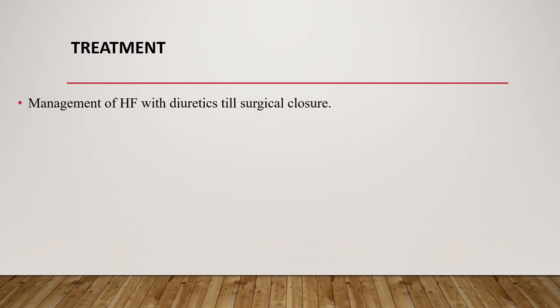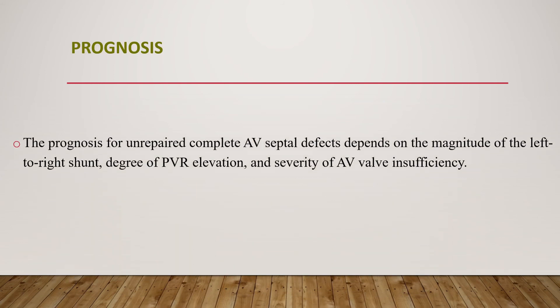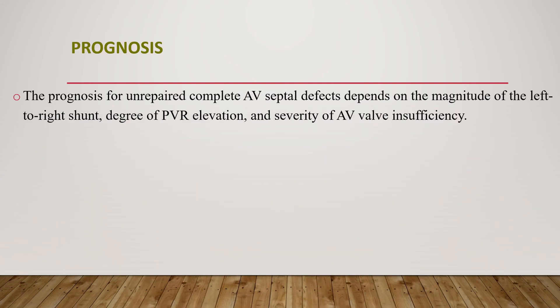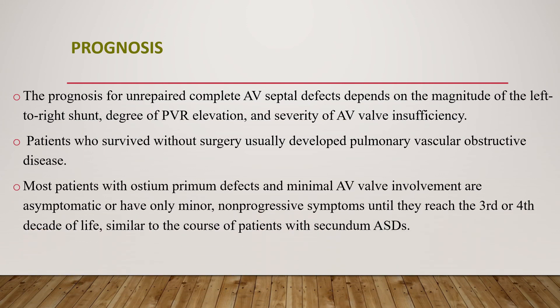Regarding treatment of atrioventricular septal defect, management of heart failure with diuretics through surgical closure is needed. Because of the risk of pulmonary vascular disease developing as early as 6 to 12 months of age, surgical intervention must be performed during infancy for all patients with AV septal defect. The prognosis for unrepaired complete AV septal defects depends on the magnitude of the left-to-right shunt, the degree of pulmonary vascular resistance elevation, and the severity of AV valve insufficiency. Patients who survive without surgery usually develop pulmonary vascular obstructive disease. Most patients with ostium primum defects and minimal AV valve involvement are asymptomatic until the third or fourth decade of life.